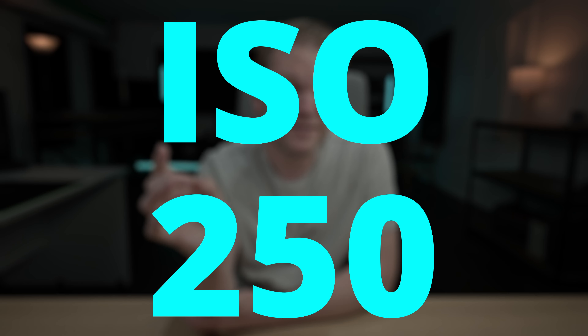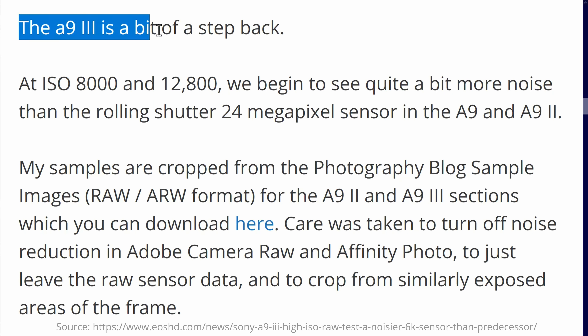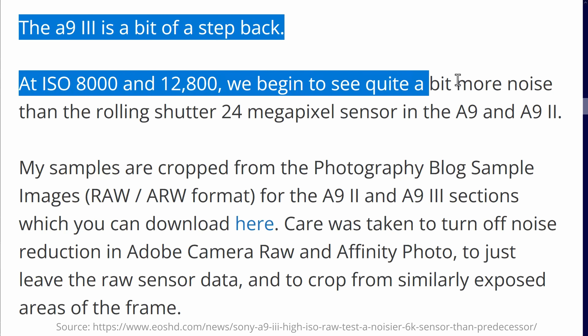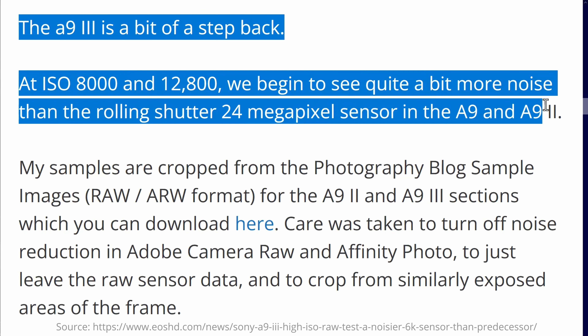This new camera has a base ISO of 250, which is a bit higher than some of the other Sony cameras. So does that mean that the A9 III is not as sensitive in low-light situations? Andrew Reid from EOSHD.com says the A9 III is a bit of a step back. At ISO 8000 and 12800, we begin to see quite a bit more noise than the rolling shutter 24 megapixel sensor in the A9 and A9 II.